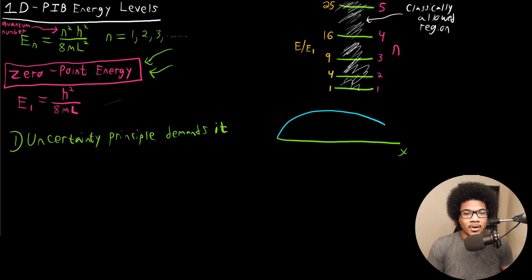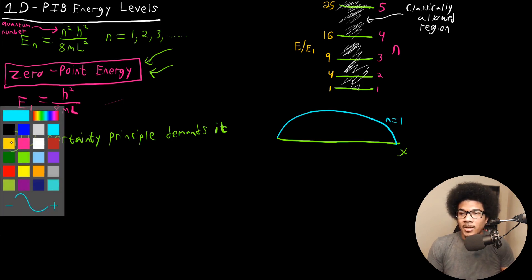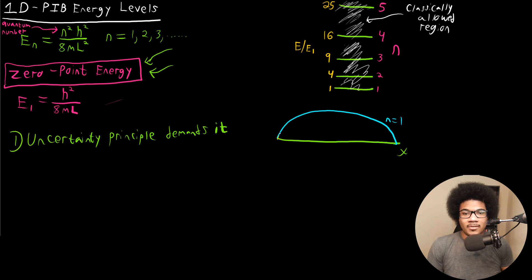So the first wave function will probably look something like this. That will be n equals one. And the second wave function will probably look something like this. That's n equals two. What you notice about these wave functions, and then they would continue to get shorter and shorter wavelengths as you go up in the quantum number.